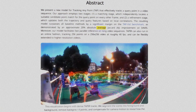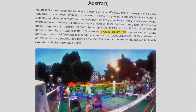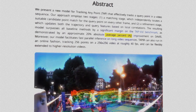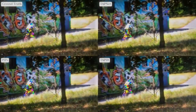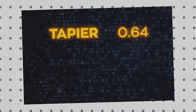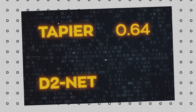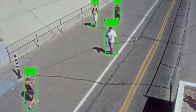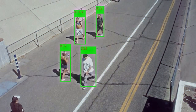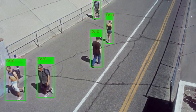The evaluation metric used was the Average Jaccard (AJ) score, which measures the overlap between predicted and ground truth point locations. The results were astonishing: TAPR outperformed all the baseline methods by a significant margin, achieving an AJ score of 0.64, compared to the second-best method, D2-Net, which scored 0.44. These findings showcase TAPR's superior tracking capabilities and its ability to closely follow points in videos.